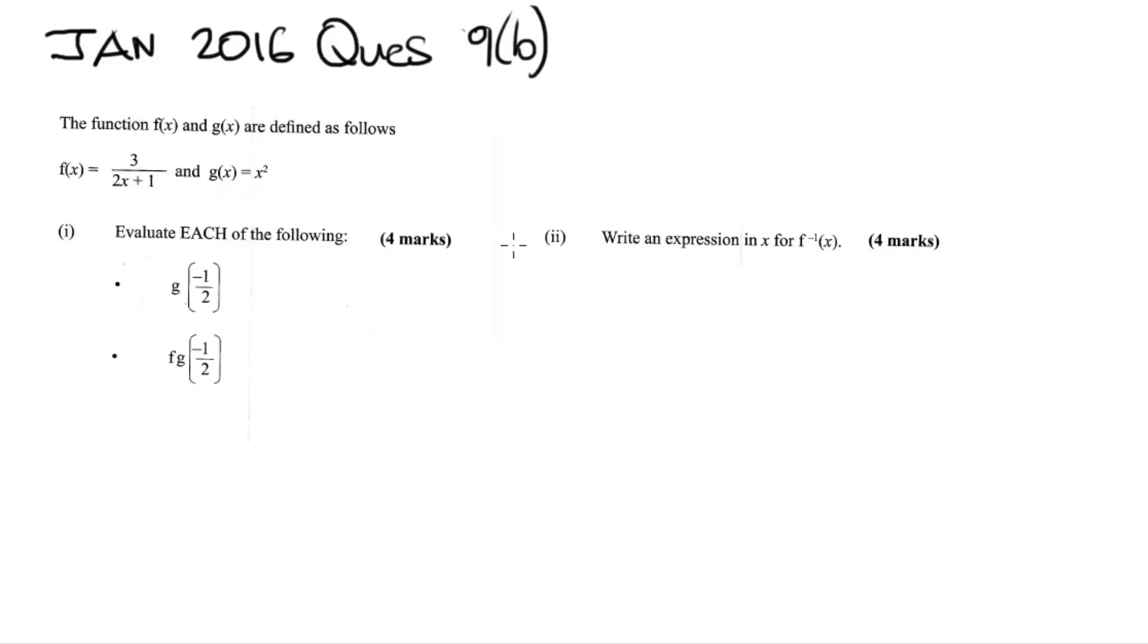So anyways, we're supposed to find, given the functions f(x) and g(x), as f(x) is 3 over 2x plus 1, and g(x) is x squared, we want to evaluate g of negative 1 half, fg of negative 1 half, and f inverse of x. So let's get to it.